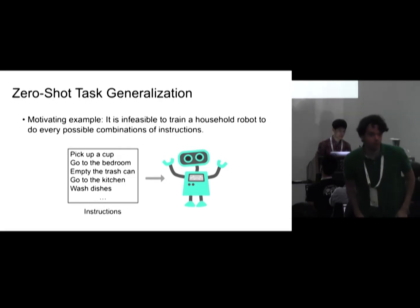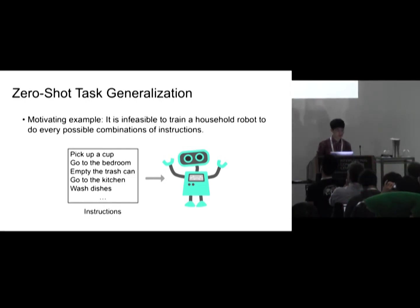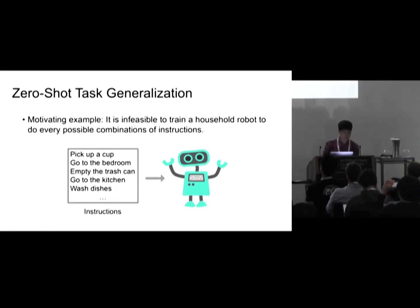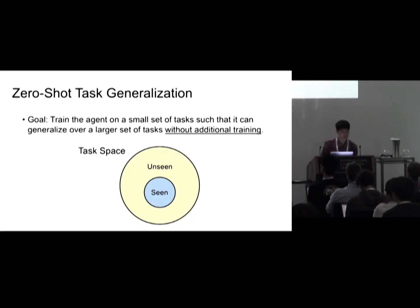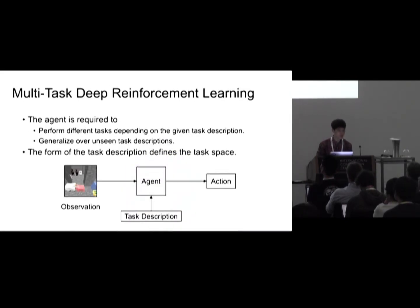Suppose that we want to train a household robot to execute a given list of instructions like this figure. It is infeasible to train this robot to do every possible combination of the instructions. So we want to train the agent on a small set of tasks such that it can generalize over a much larger set of tasks without any additional training procedure. We assume a multi-task setting where the agent has to perform many different tasks depending on the given task description, and it has to generalize over unseen task descriptions during evaluation.